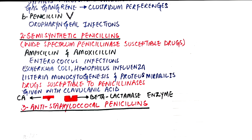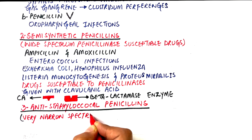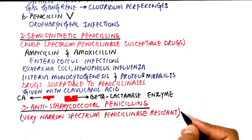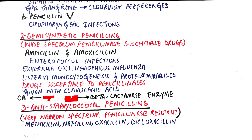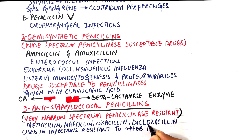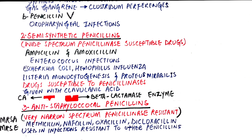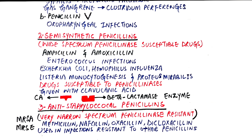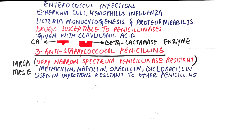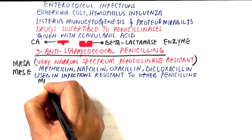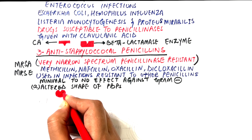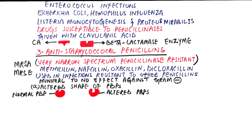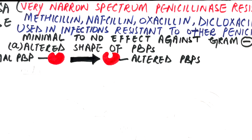The third type of penicillins are the anti-staphylococcal penicillins. As the name suggests, these are indicated in staphylococcal infections and are very narrow-spectrum penicillinase-resistant drugs. The anti-staphylococcal penicillins are namely methicillin, nafcillin, oxacillin, and dicloxacillin. These drugs are only used in staphylococcal infections resistant to other types of penicillins. However, methicillin-resistant Staphylococcus aureus (MRSA) and methicillin-resistant Staphylococcus epidermidis are some resistant strains known so far. Also, these drugs have minimal to no effect against gram-negative bacteria, possibly due to altered shape of penicillin-binding proteins inhibiting drug binding, or decreased permeability of the drug.